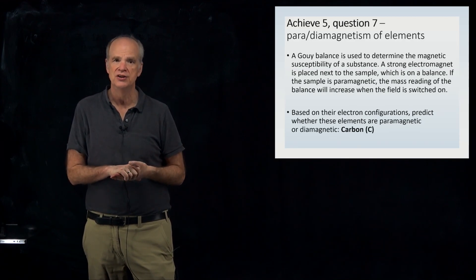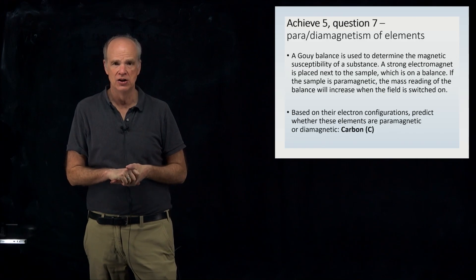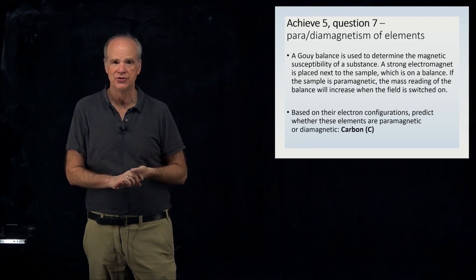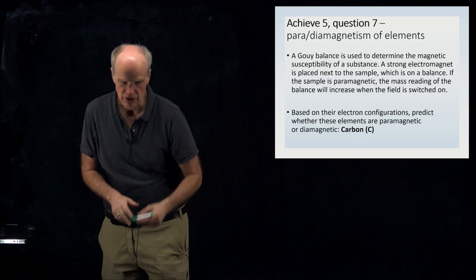All you have to do is write out the orbital notation for that neutral element and then examine to see if there are any unpaired electrons in it. So let me go ahead and do that.